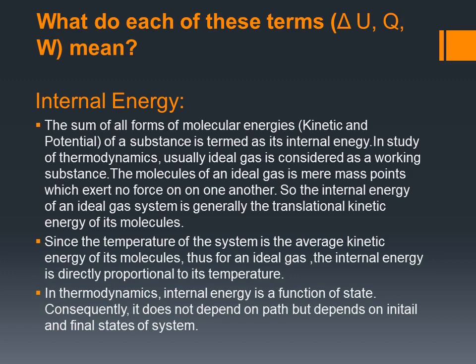We will start with the internal energy, which is represented by delta U. The sum of all the forms of molecular energy — kinetic and potential — of a substance is termed as its internal energy. In the study of thermodynamics, usually an ideal gas is considered as a working substance. The molecules of an ideal gas are mere mass points which exert no force on one another, so the internal energy of an ideal gas system is generally the translational kinetic energy of its molecules.